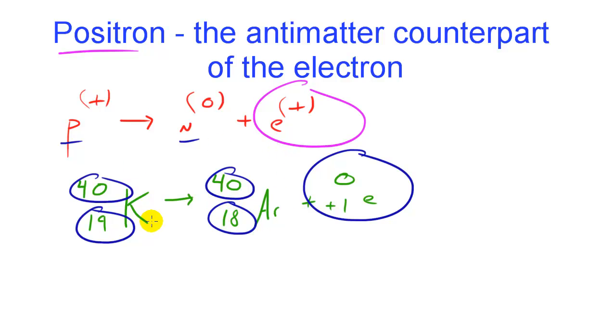So basically we have a new element that's formed that has the same mass but one less proton and we also have a positron that gets emitted from the nucleus. And that's basically it. So let me think, the positron gets emitted from the nucleus. Yeah I think I covered everything. So just remember that it loses a proton but it gains a neutron and you get a positron emitted.